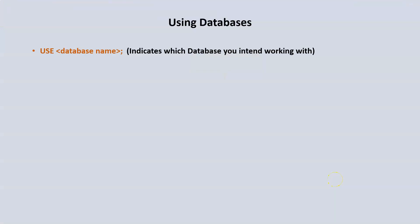Because there are several databases within SQL Server, we need to indicate which database we intend to work with. The syntax to select a database is USE followed by the name of the database and a semicolon. So if we want to use the basketball database, we type USE Basketball followed by a semicolon. The same applies for other databases — for example, USE Computers semicolon.